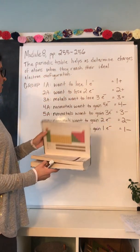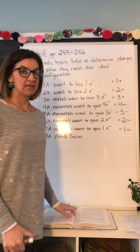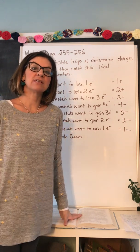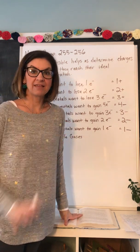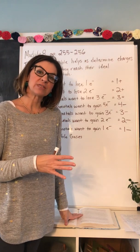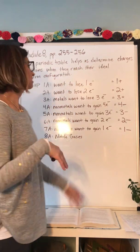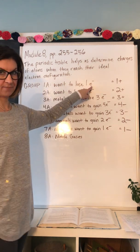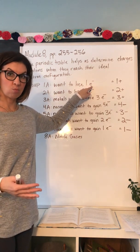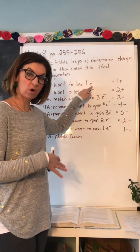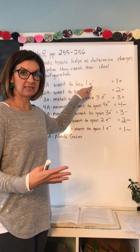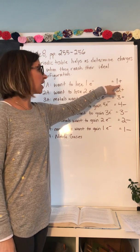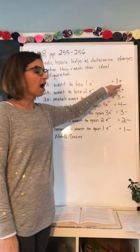Group 1A — the first column in the periodic table — has only one valence electron. It would be really easy for those atoms to just kick that one electron out, and then their next lowest orbital would be full of eight electrons. So group 1A wants to lose one electron. After it loses its one electron, it would have one more proton than it has electrons, leaving it with an overall charge of 1+.